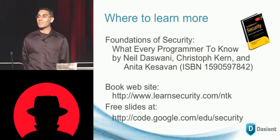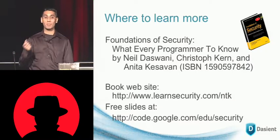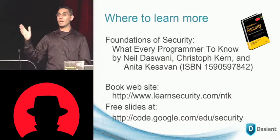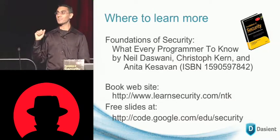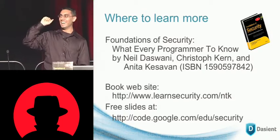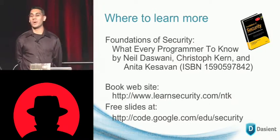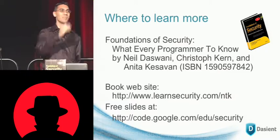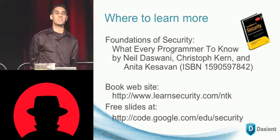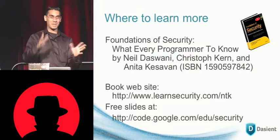Happy to take more questions offline, but first the book raffle. The trivia question: can somebody name one of Dacient's investors? The correct answer is Stratton-Sklavos, the former CEO of VeriSign/AirSign, who is one of Dacient's investors. The winner is invited to come up for a copy of the book.